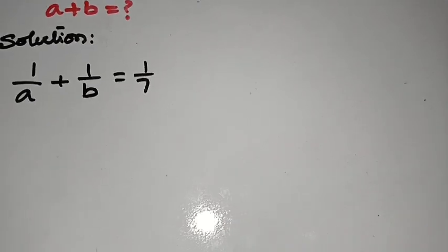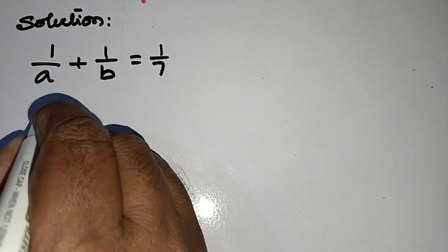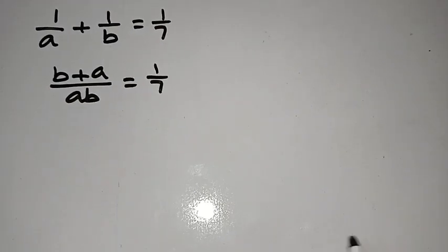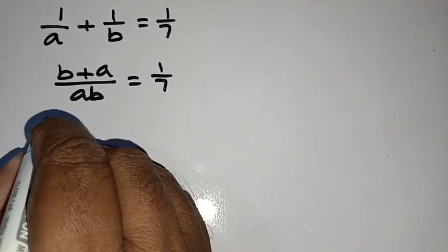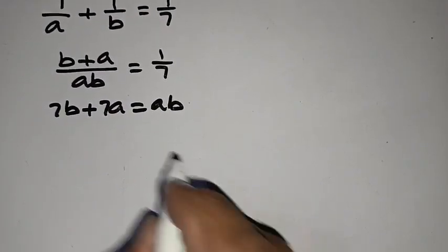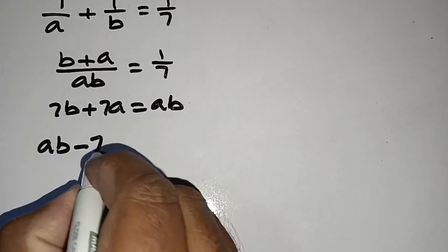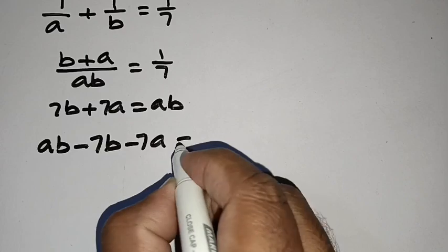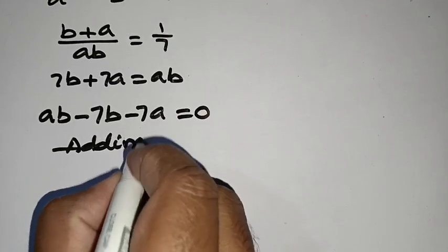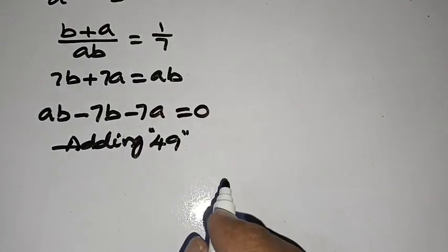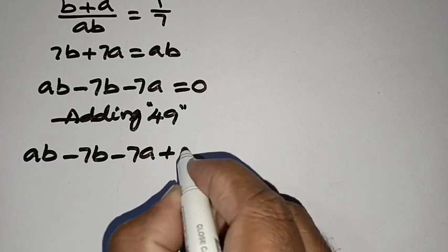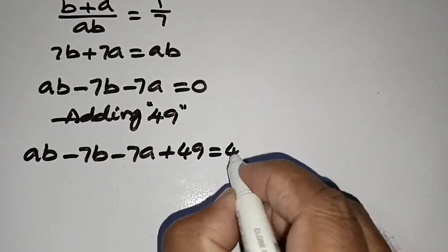So now we can write B plus A by AB is equal to 1 by 7. And upon cross multiplication, 7B plus 7A is equal to AB. Bringing all terms to the left hand side, we have AB minus 7B minus 7A is equal to 0.